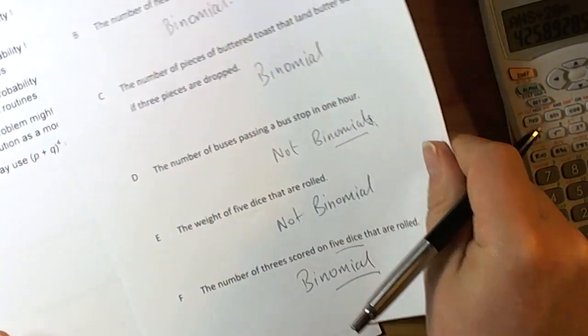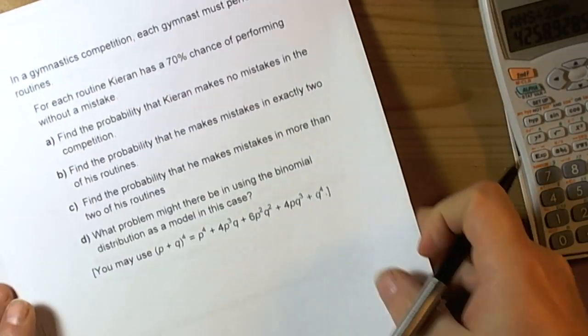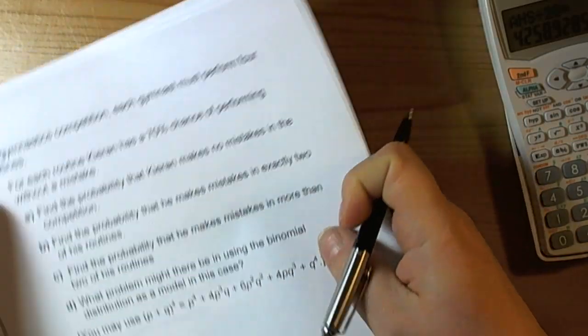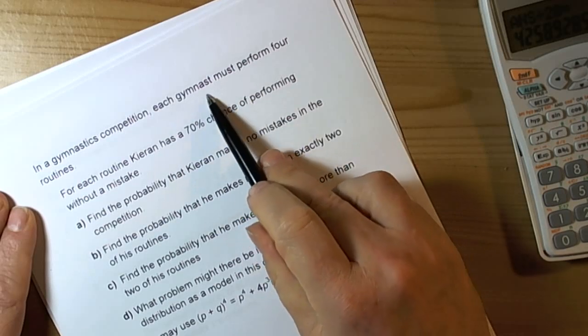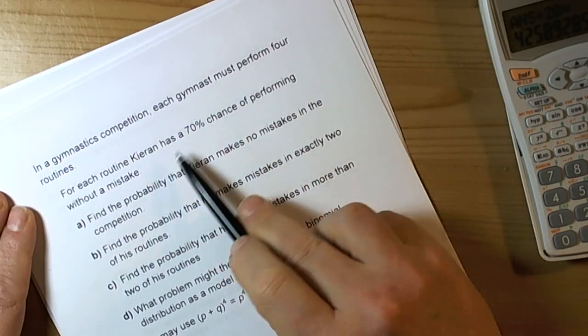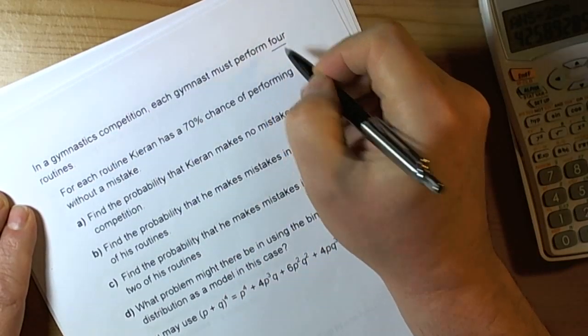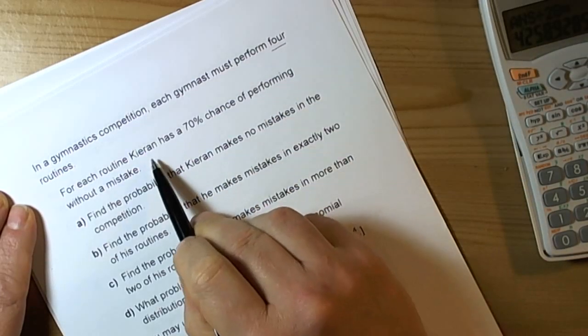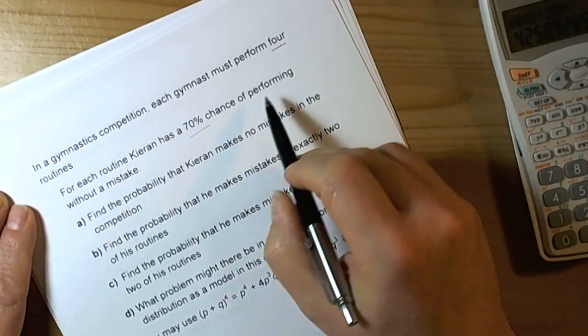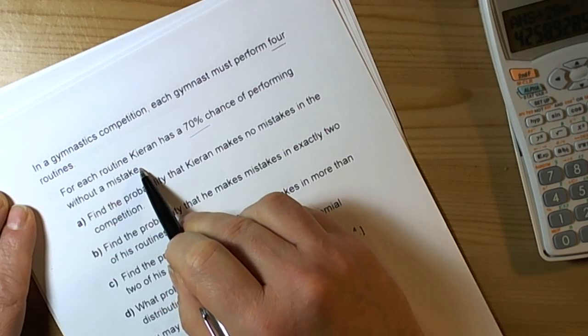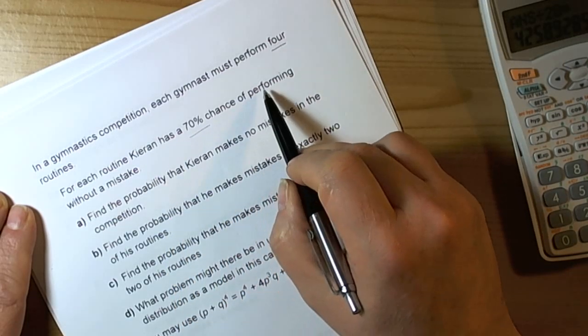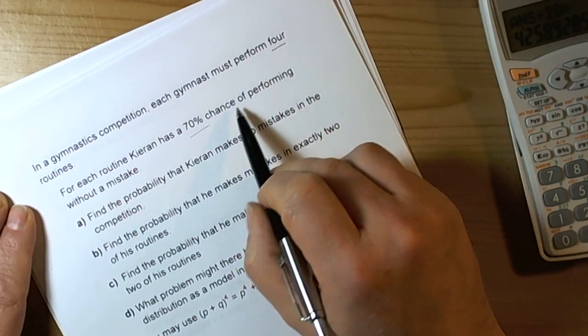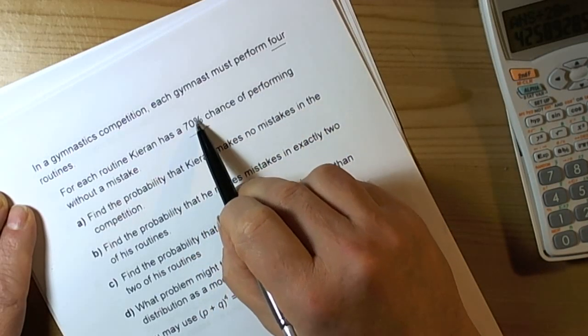So let's have a look at how a question would work if you are asked to consider a binomial distribution. We've got here a scenario where there's a gymnast performing four routines. So we've got a fixed number of trials. It's telling us there's a 70% chance of performing without a mistake. So therefore there's a 30% chance of him not performing without a mistake.